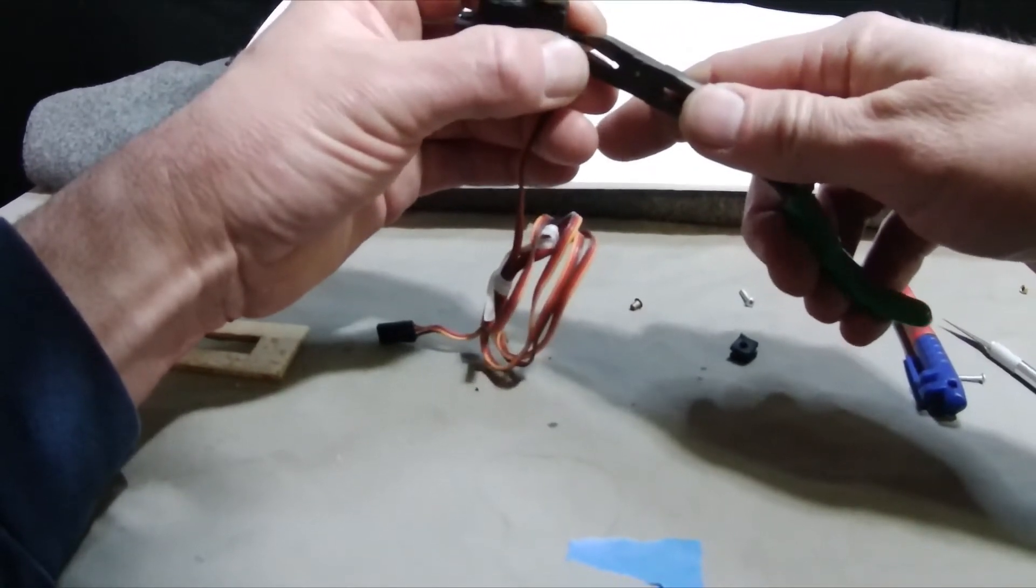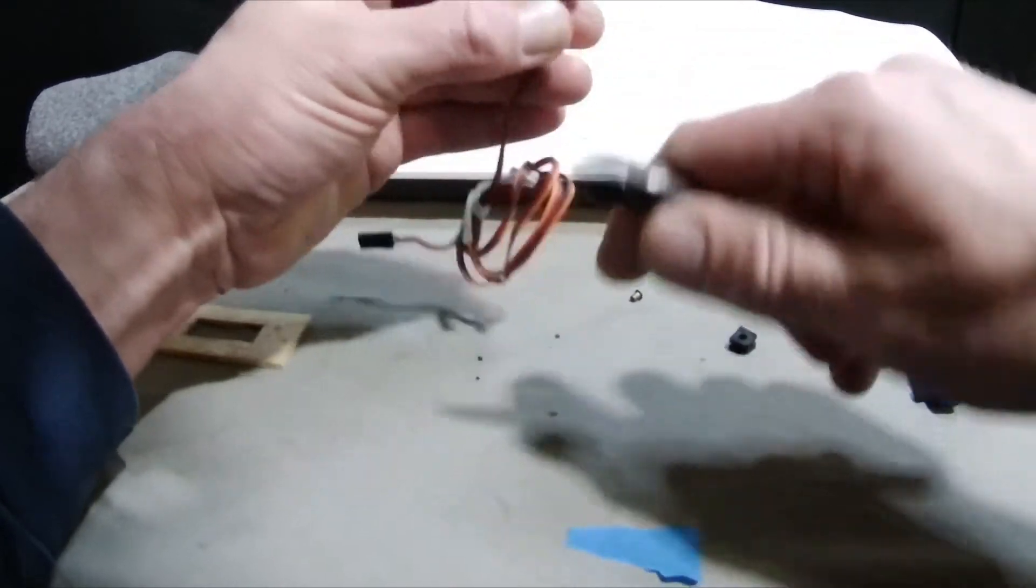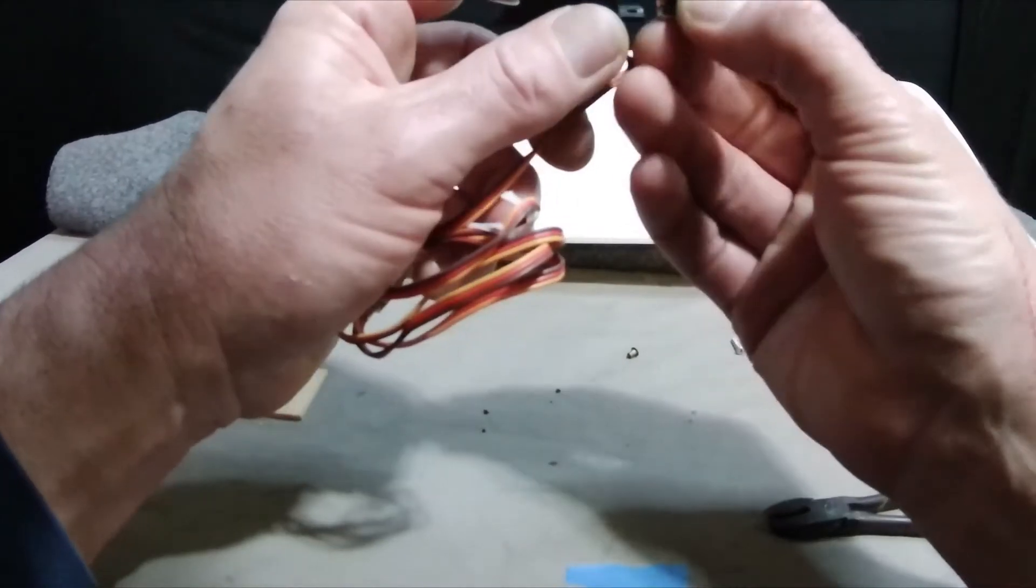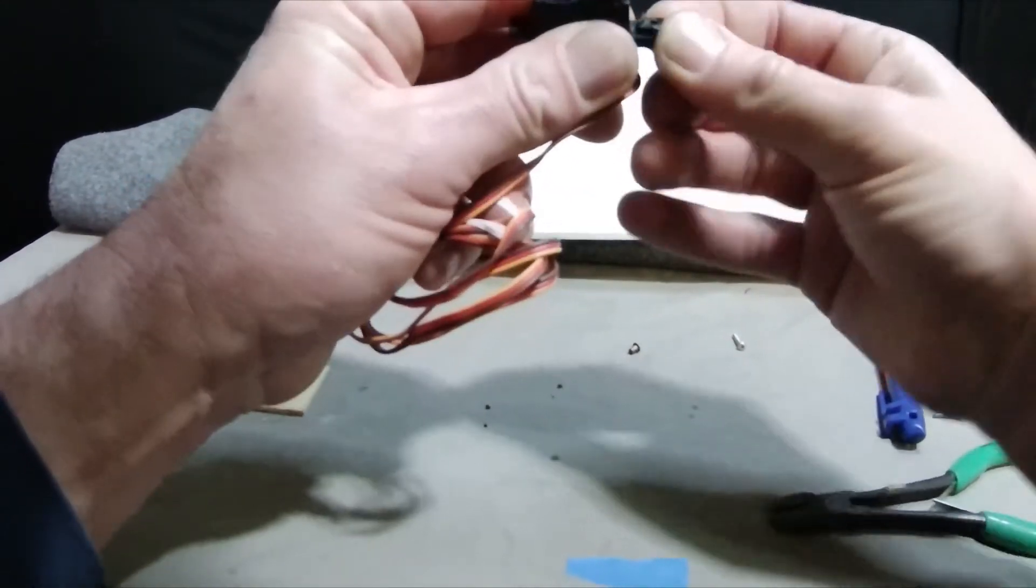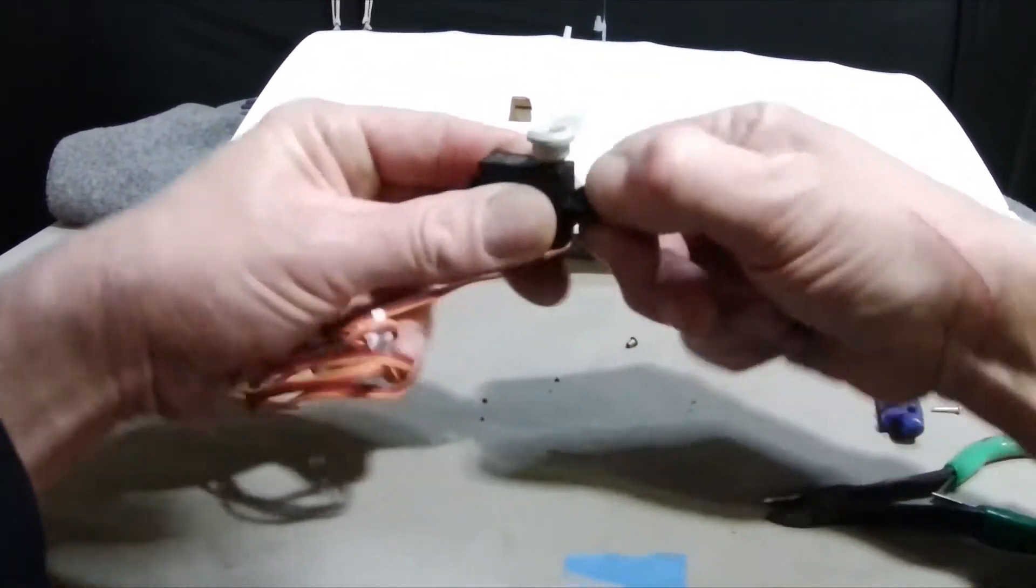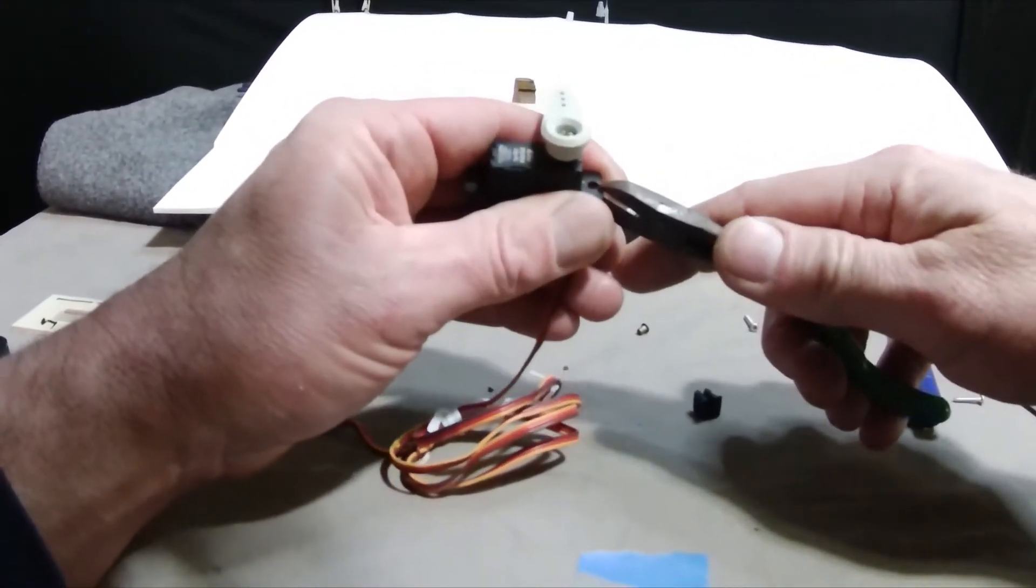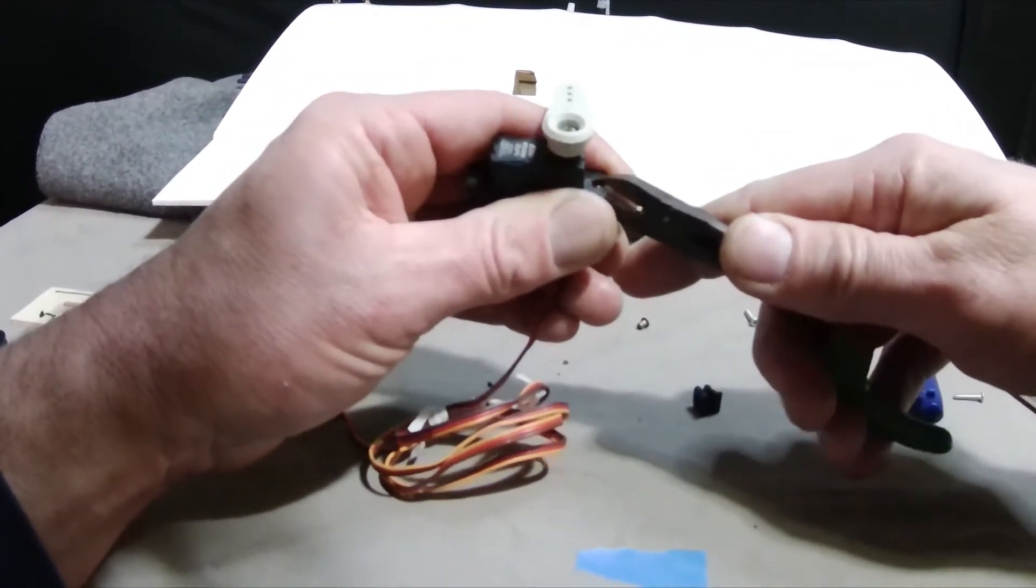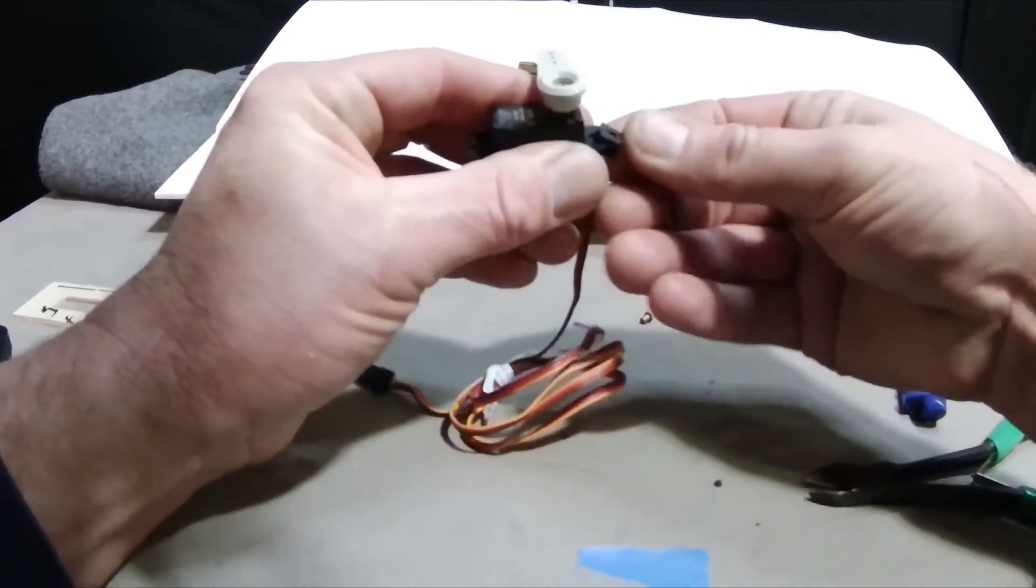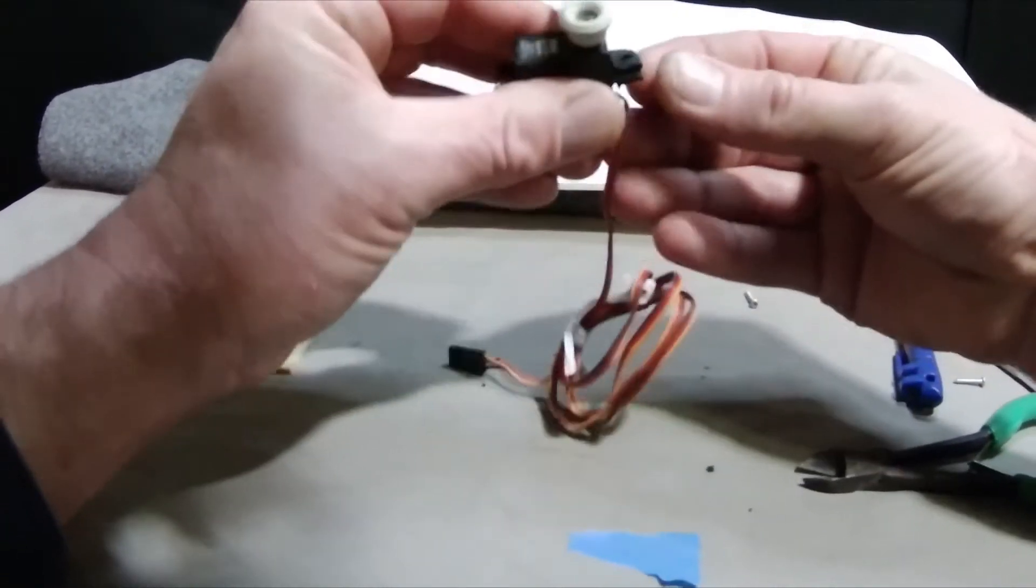And then this rubber will go in there and then we can get our little brass insert in. About like so. Let's try that. I might have to go a little bit more. And we can get this to push in there. Kind of got to manipulate it in there.